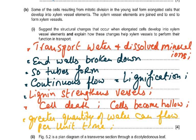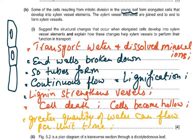Some of the cells resulting from mitotic division in the young leaf form elongated cells. These elongated cells are joined end to end and have a vacuole, cell wall, cell membrane, and cytoplasm. They develop into xylem vessel elements. The question asks: suggest the structural changes that occur when elongated cells develop into xylem vessel elements, and explain how these changes help xylem vessels perform their function.